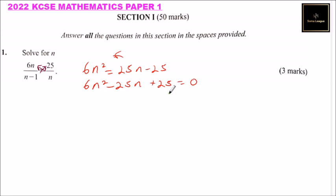So we check whether we can solve using the factorization method. The coefficient of n squared is 6. We multiply 6 multiplied by 25, that will give us 150. We get two numbers: a multiplied by b should give us 150, and a plus b should give us this coefficient of n which is 25.